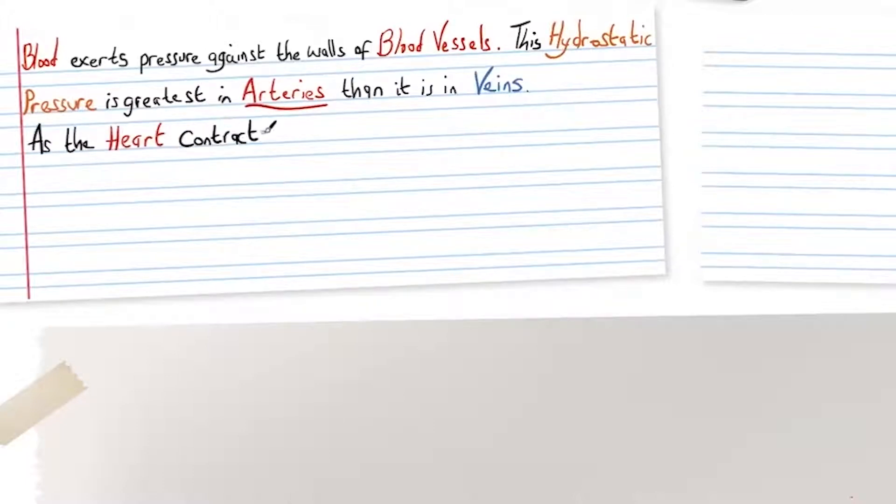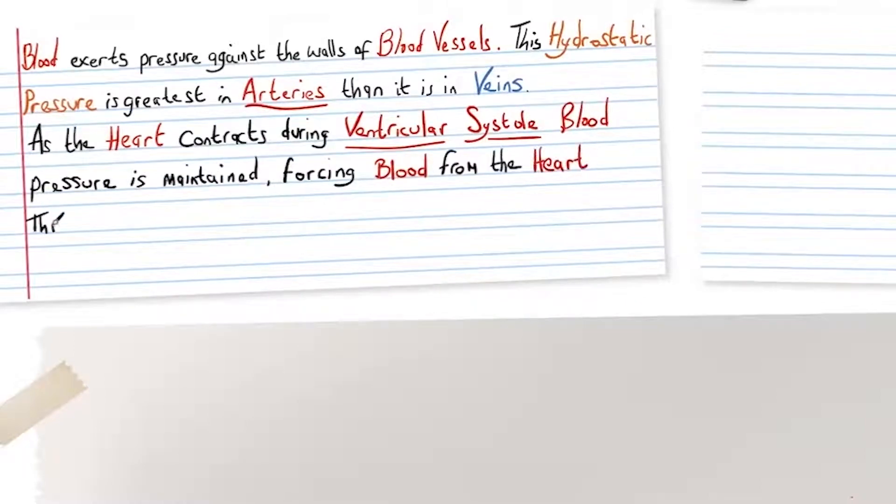As the heart contracts during ventricular systole, blood pressure is maintained forcing blood from the heart through arteries and arterioles to capillaries where exchange of substances takes place.